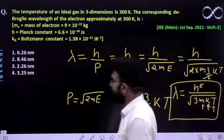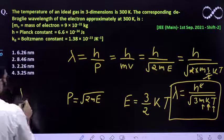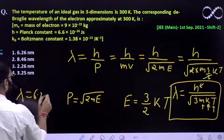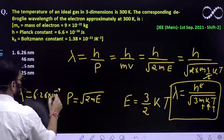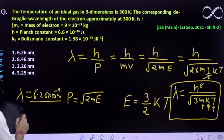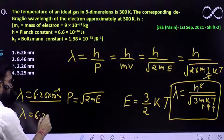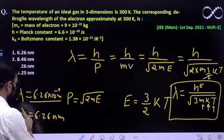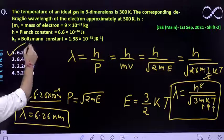So you can solve it and eventually you will get the value of lambda as 6.26 into 10 raised to power minus 9 meter. This expression that you must get. So that means this is nothing but 6.26 nanometer. So that means our answer is first.